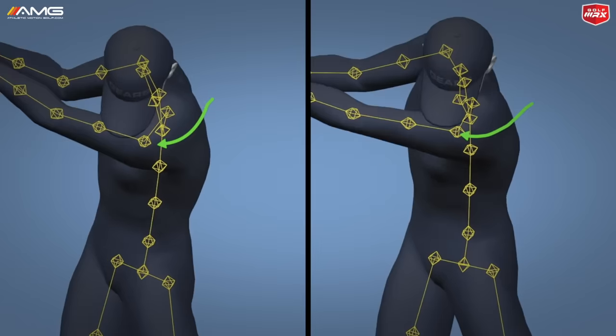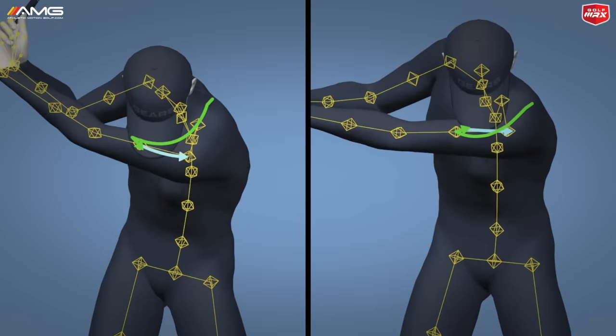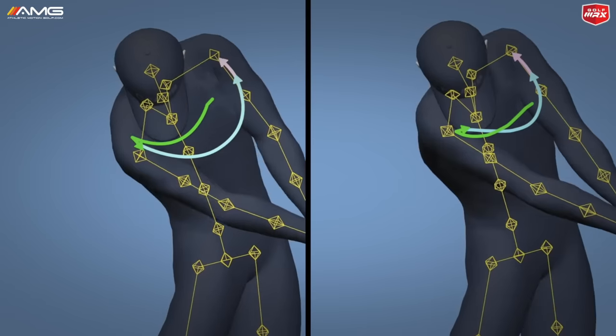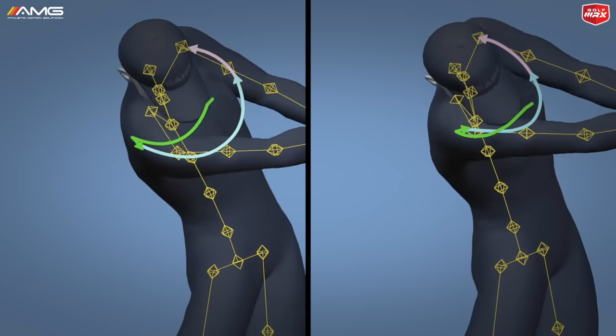In this episode of Pros vs. Ams, we're going to take a look at a typical left shoulder movement pattern of a professional golfer and compare that to what we typically see with amateur golfers.